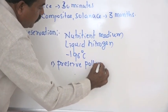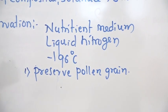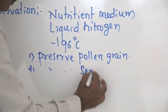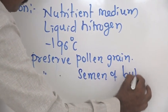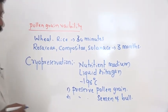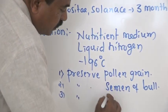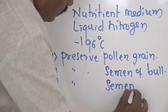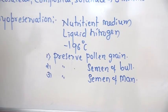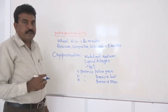By cryopreservation technique, we can preserve pollen grains and these pollen grains can be used for hybridization technique in plant breeding at a desired time. Similar technique is also used to preserve semen of human beings and used for different artificial reproductive techniques like test tube baby technique and GIFT.